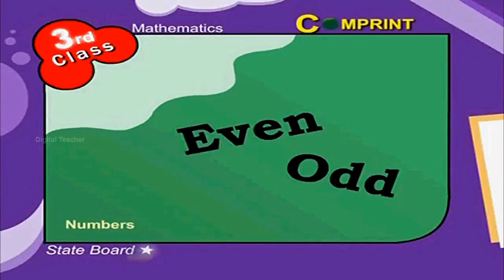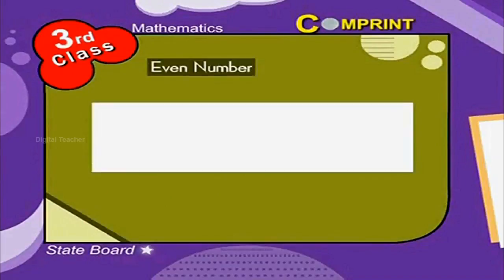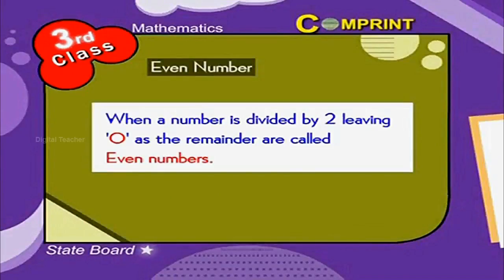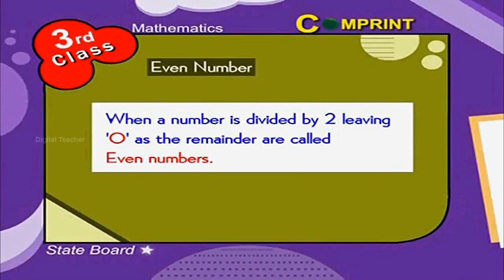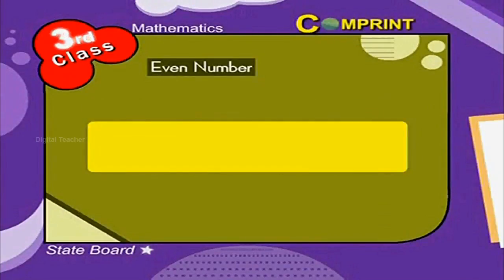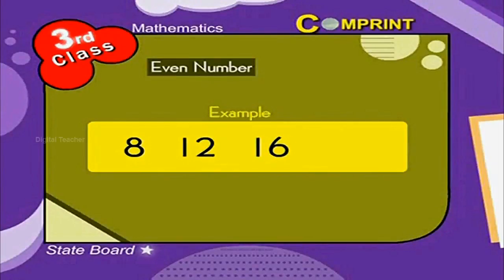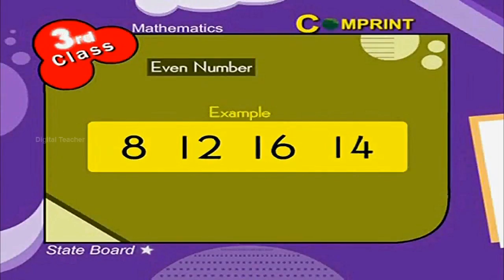Even Number: When a number is divided by 2, leaving 0 as the remainder, it is called an even number. For example, 8, 12, 16, 14, and so on.